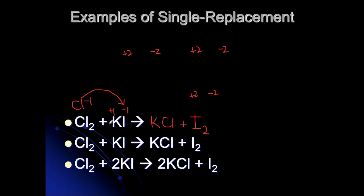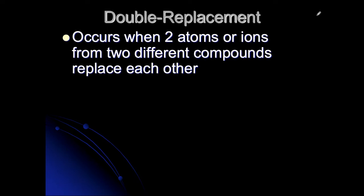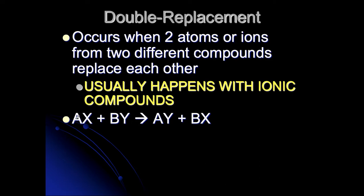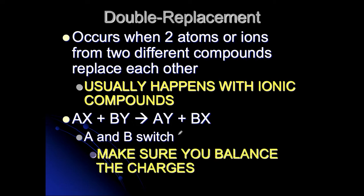In this one, Cl just doesn't replace K — you have to look at the charges. Double replacement is similar to single replacement, but here you have two compounds that are going to replace each other. Two atoms in each compound switch. This will be with ionic compounds again because you'll have a positive and negative. The general example is AX plus BY — A and B switch places, so A joins with Y forming AY, and B joins with X forming BX. Again, make sure you balance your charges when creating new products.